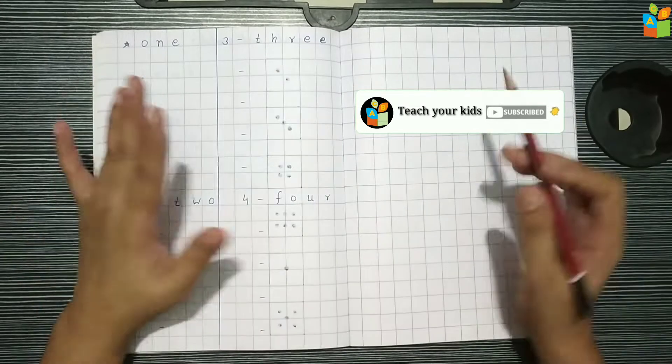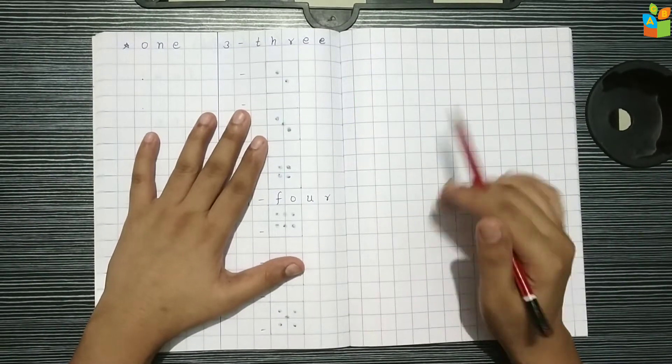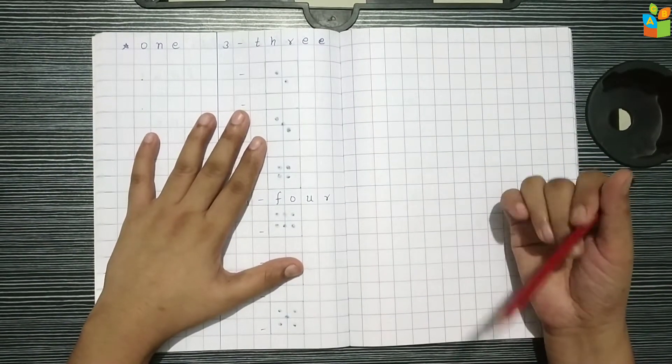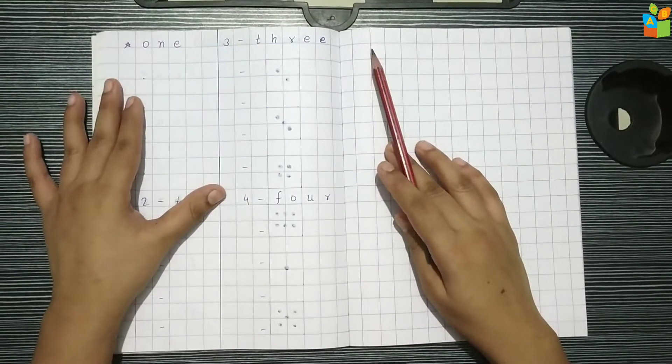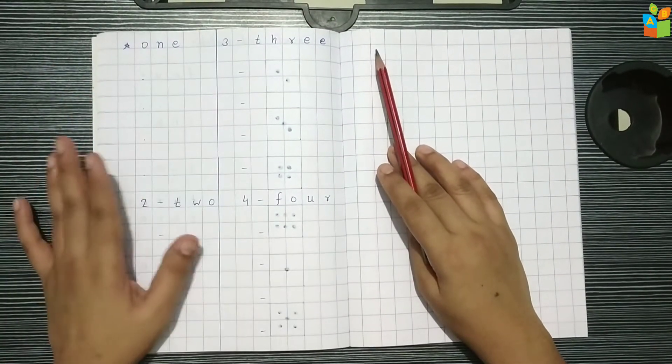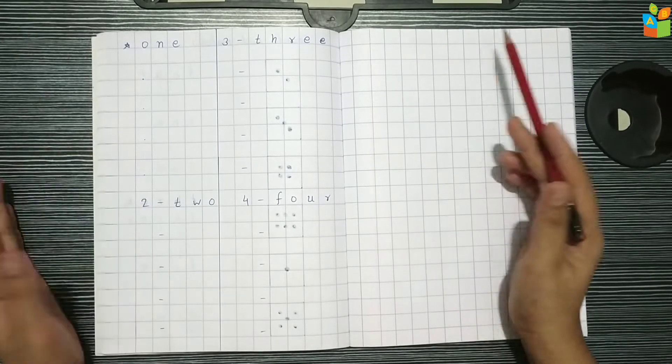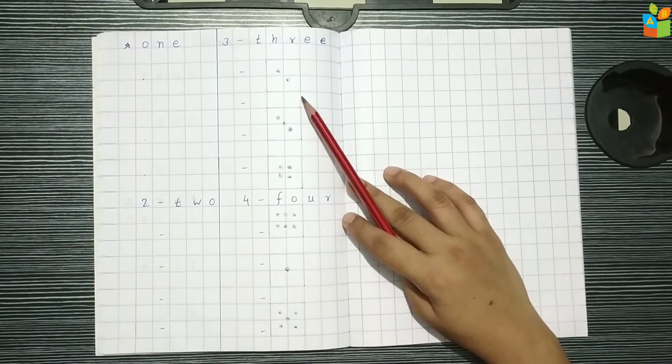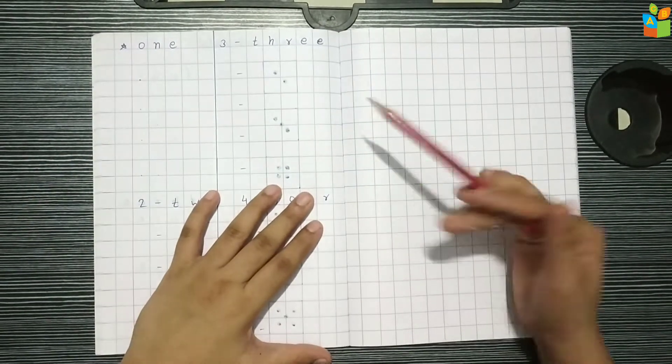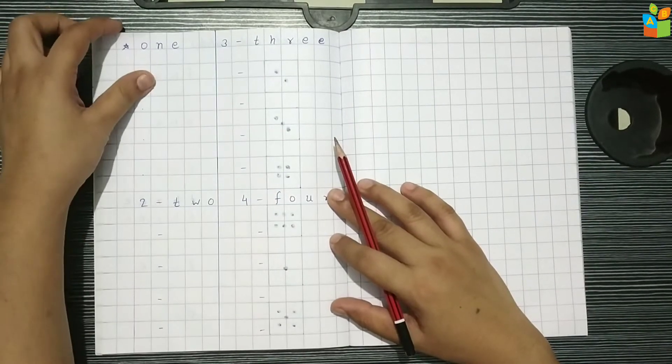If you need previous worksheets, then click on the i button and there will be previous worksheets. I will give you the link in the description box. Now you can see the previous day's worksheets, how they have been made.